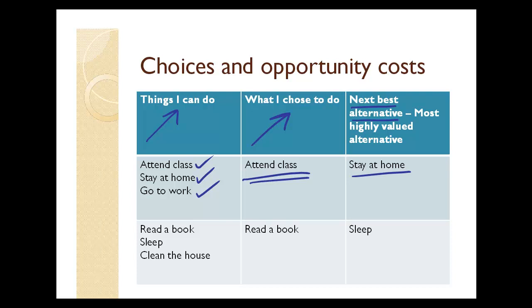So we would say this: the opportunity cost of my attending class is staying at home. That is what I forfeited. That is what I gave up. That was the cost to me of attending class — what I would have done.